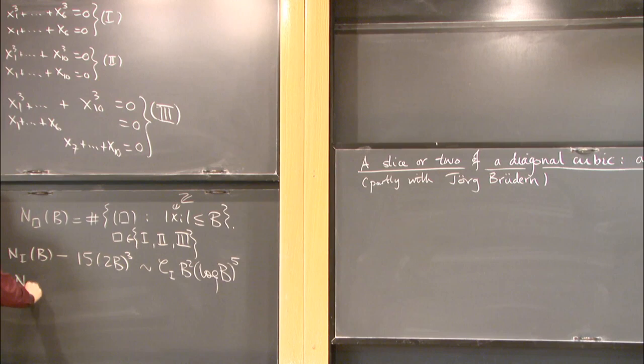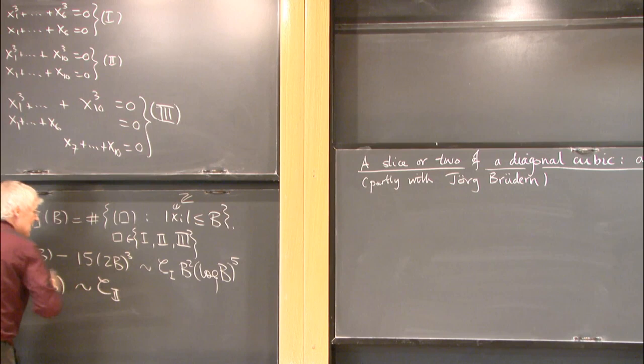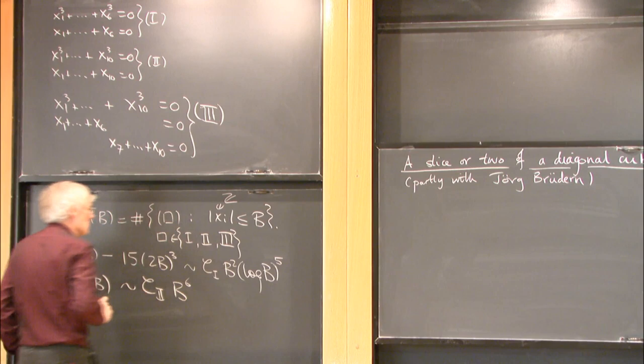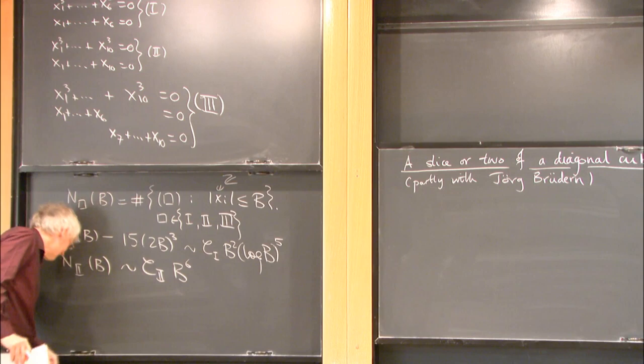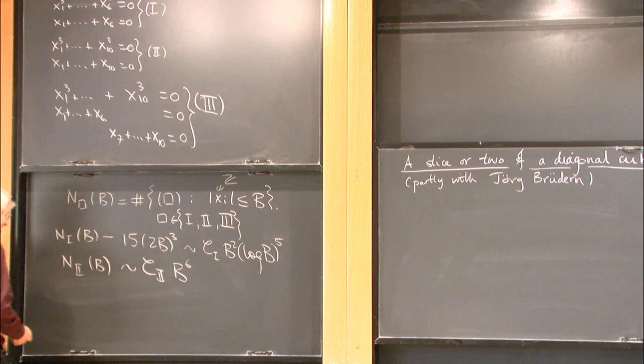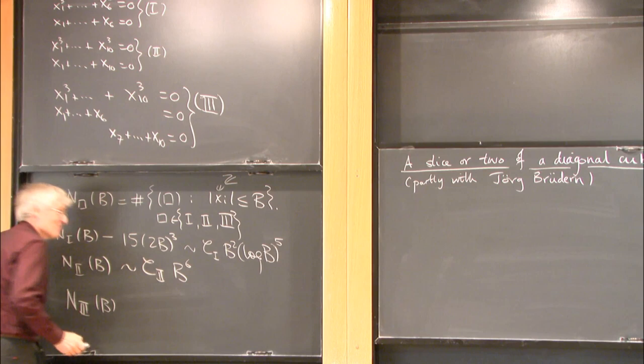The second counting function N2(B) is asymptotic to another constant c2, and this time it grows like B to the sixth.